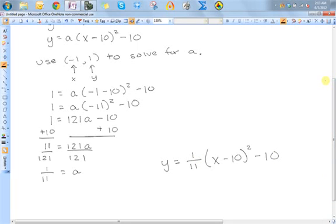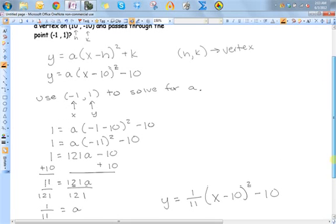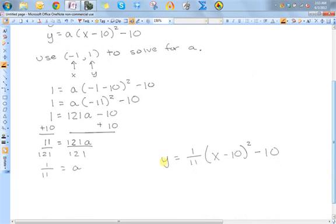And if you wanted to, you could double check by putting the two points that we know are definitely on the parabola, (10, -10) and (-1, 1), plug those into x and y and make sure that it does, in fact, work. And you will see that it does work.